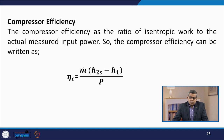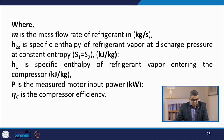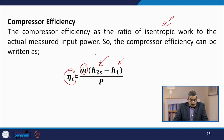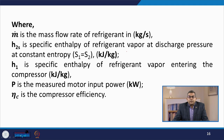Compressor efficiency is defined as the ratio of isentropic work to the actual measured input power. The formula is: η_c = m × (h₂s − h₁) / P, where m is the mass flow rate of refrigerant (kg/s), h₂s is the specific enthalpy of refrigerant vapor at discharge pressure at constant entropy with s₁ = s₂ (kJ/kg), h₁ is the specific enthalpy entering the compressor (kJ/kg), and P is the measured motor input power (kW).